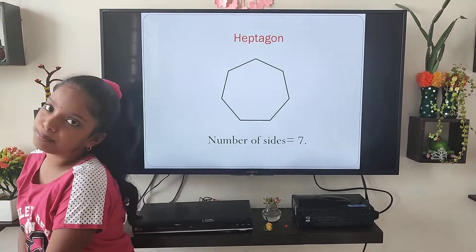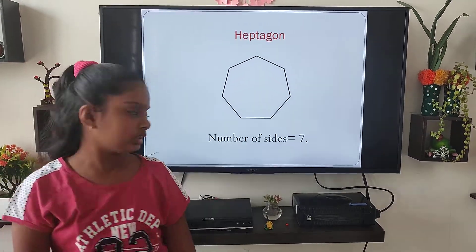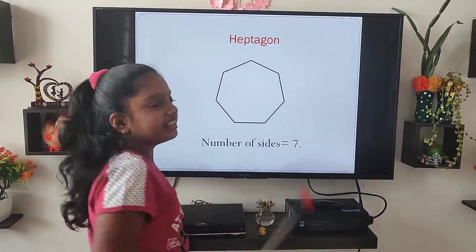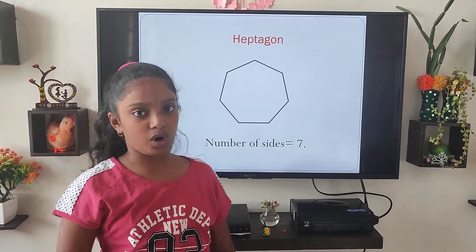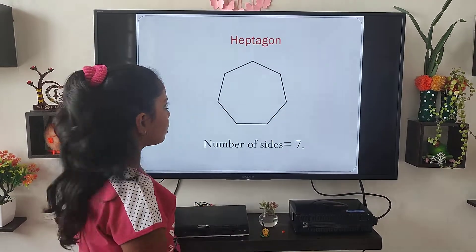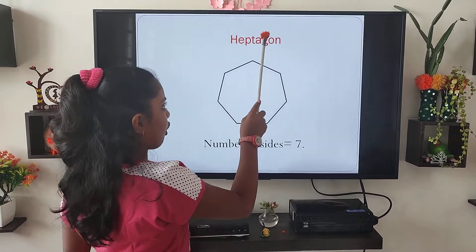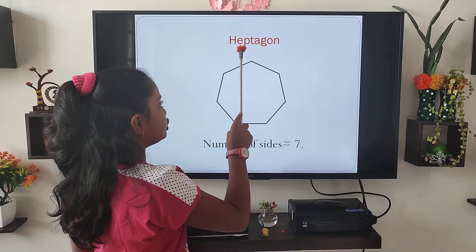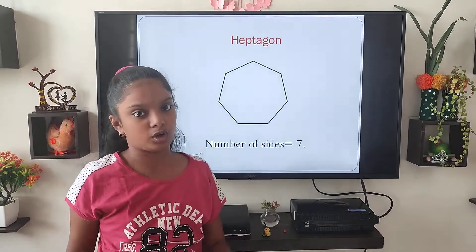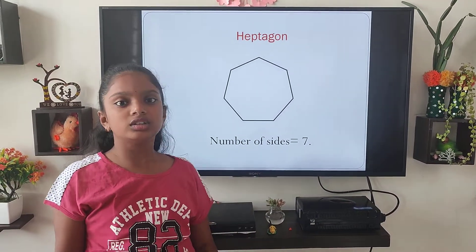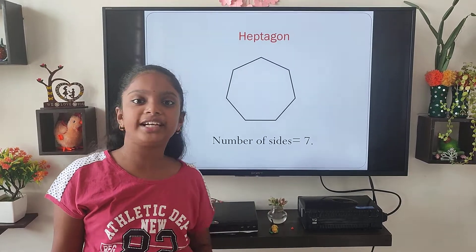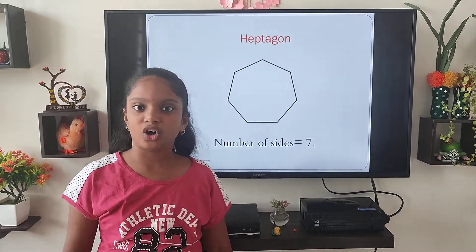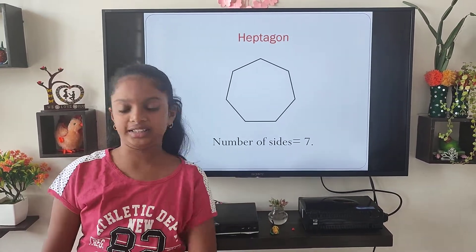Next is heptagon. The shape which has seven sides is known as a heptagon. If you also remove the 'A' from heptagon — H-E-P-T-G-O-N — it has seven letters in it, and the sides are also seven.